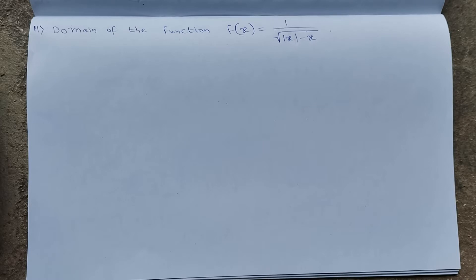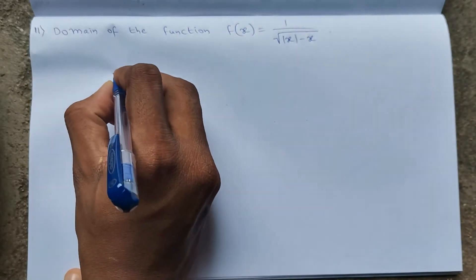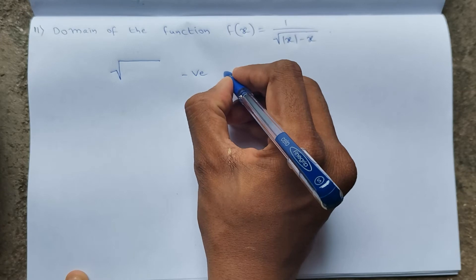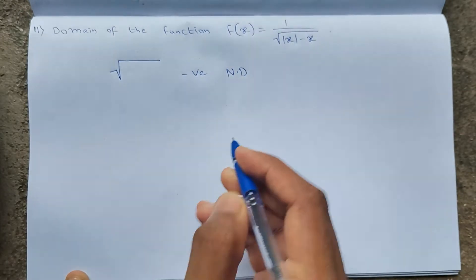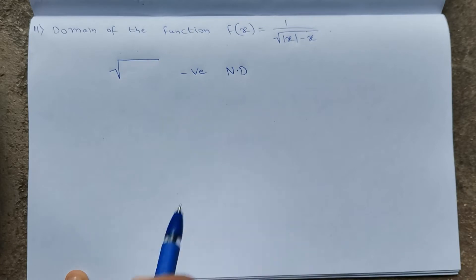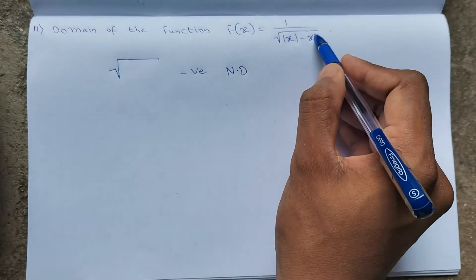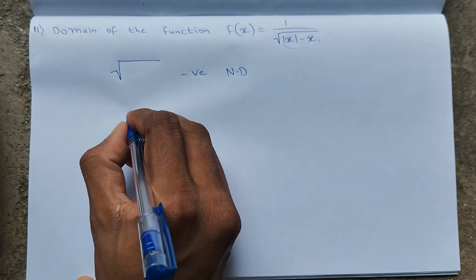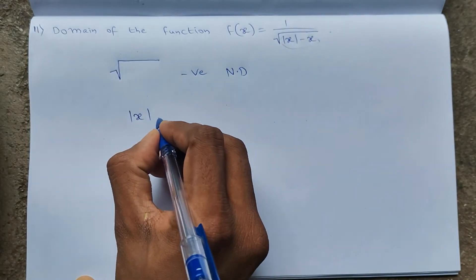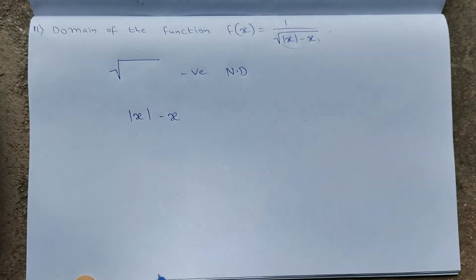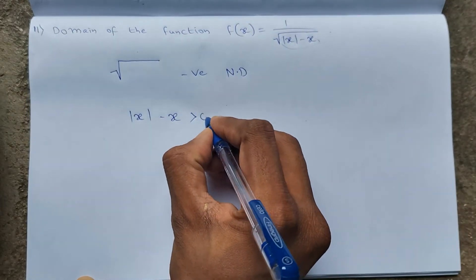The question is: what is the domain of the function f(x) = 1 / √(|x| - x)? We know very well that inside a square root, negative numbers do not exist. So the expression inside the square root, which is |x| - x, should be greater than 0.